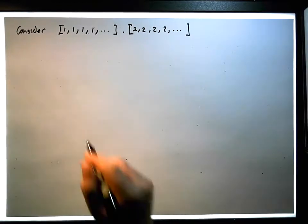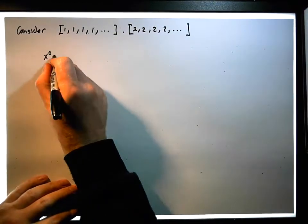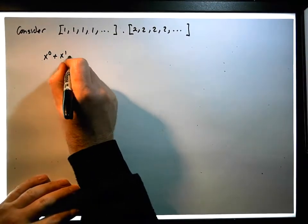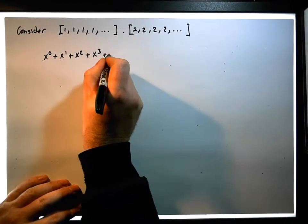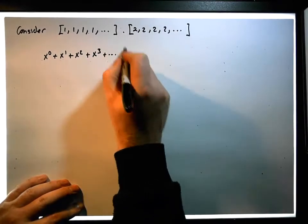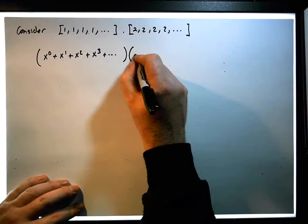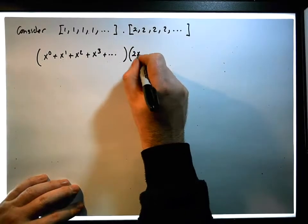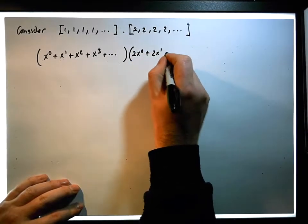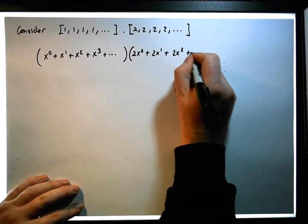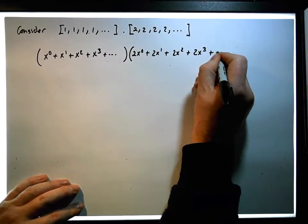The power series for this is simply x to the 0 plus x to the 1 plus x to the 2 plus x to the 3 plus dot, dot, dot, which needs to be multiplied by the power series of this, which is 2x to the 0 plus 2x to the 1 plus 2x squared plus 2x cubed plus dot, dot, dot.